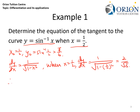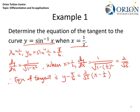Therefore, the equation of the tangent is y minus π/6 equals (2 over square root 3)(x minus one half). If I rearrange to write it in the form y equals mx plus c, I get y equals (2 over square root 3)x minus (1 over square root 3) plus π/6. And this will be the equation of the tangent to the graph of y equals sin inverse x when x equals one half.